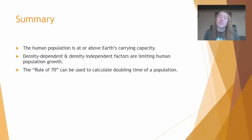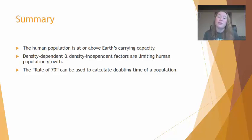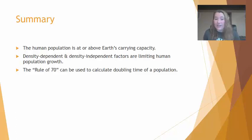In summary, the human population is currently at or perhaps even above the Earth's carrying capacity, which is concerning. However, innovation has allowed us to overreach what we previously thought was the carrying capacity. There are still density-dependent and density-independent factors limiting human population growth that we must innovate to address. We can use the Rule of 70 to calculate population doubling time for human or any natural population. Please leave your questions below — I hope you learned something from this video.